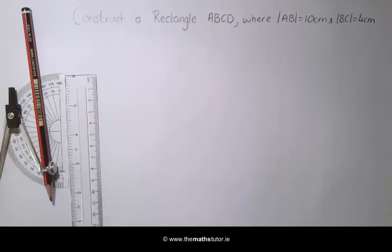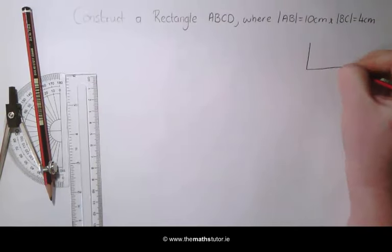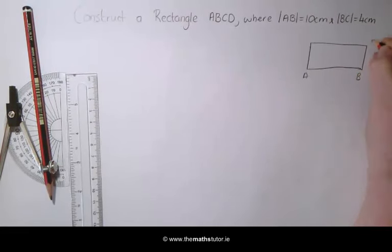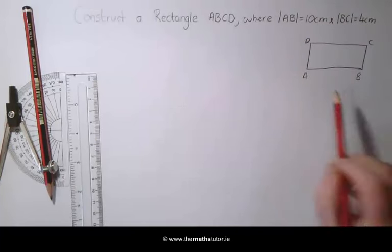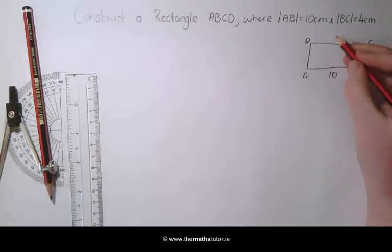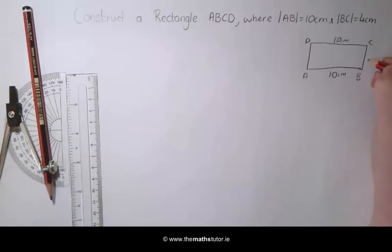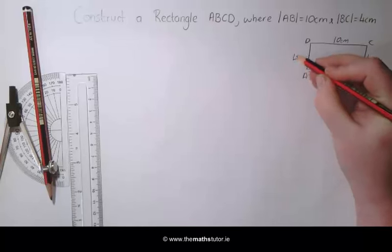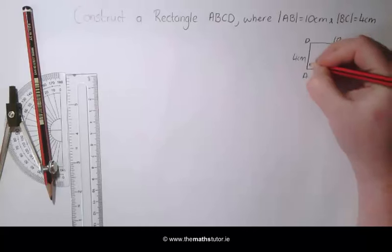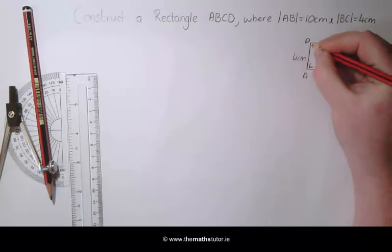The first thing we are going to do is draw a rough sketch of the rectangle ABCD. AB is equal to 10cm, so therefore DC is equal to 10cm. BC is equal to 4cm, so therefore AD is equal to 4cm. We also know that in a rectangle, all the corners are 90 degrees.